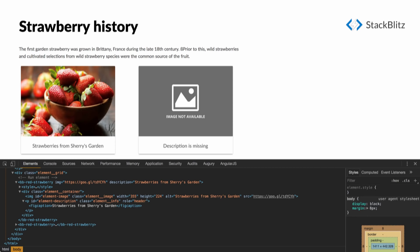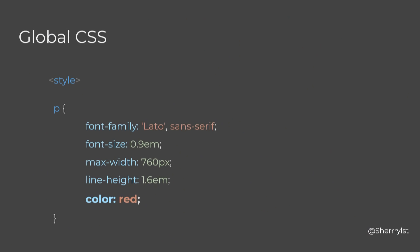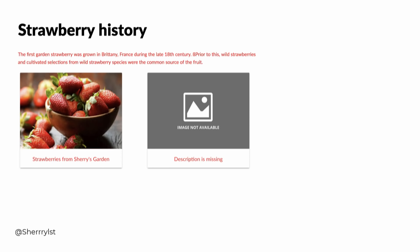And this is the result — we used our template and custom elements and everything works. But our dog doesn't look happy. Why? Because if we have a global CSS with a p tag styled as red, all p tags — including those inside our custom element — become red. This is the style encapsulation problem I was talking about.